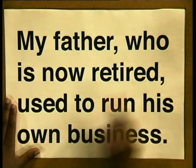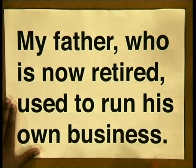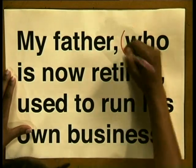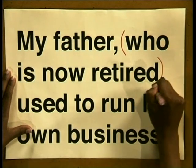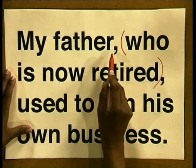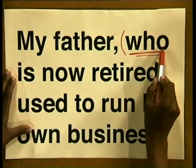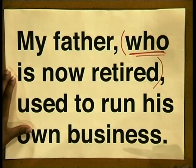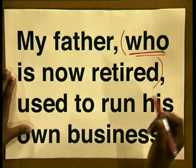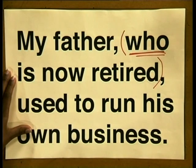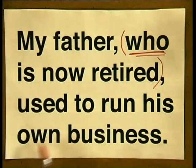Let me show you how relative pronouns are used to introduce additional information in the form of a subordinate clause. My father, who is now retired, used to run his own business. In this sentence, the subordinate clause is 'who is now retired.' It tells us more about the noun 'my father.' It is introduced by the word 'who,' which links 'my father' to the rest of the subordinate clause. The subordinate clause is placed between commas or brackets. It could be left out completely and the sentence would still make sense: 'My father used to run his own business.'